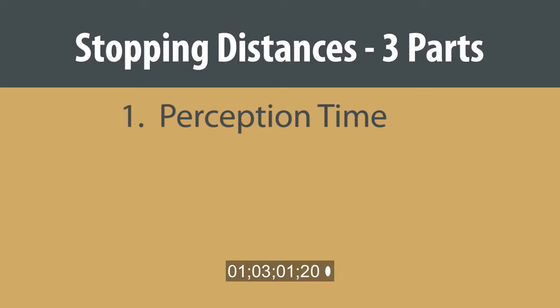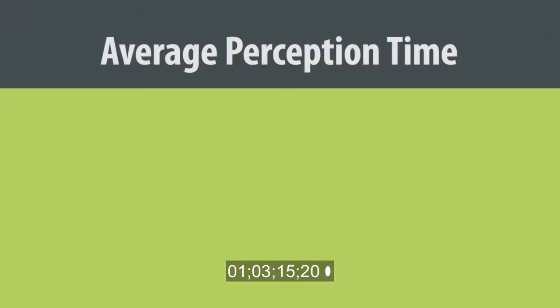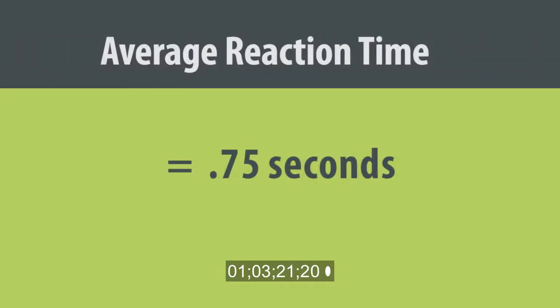It's your perception time, your reaction time, and then your stopping distance. The average perception time, which means the time that you realize you have to stop, which should be any time you see something red in front of you, is about three-fourths of a second. The average reaction time, which is the time it takes you to go from the accelerator to the brake, which should be quicker if you have your foot positioned the way I taught you, is about three-fourths of a second.